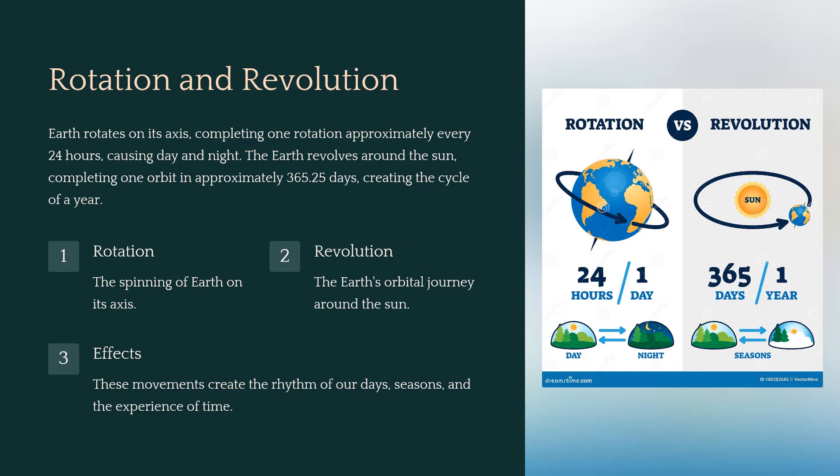Earth's rotation on its axis takes approximately 24 hours, giving us day and night. At the same time, Earth's revolution around the sun takes around 365.25 days, defining the yearly cycle. These two motions are essential to the rhythm of time — day and year.